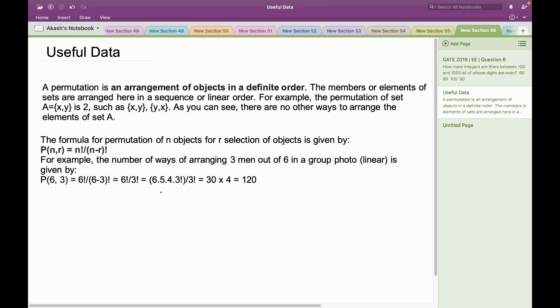In this problem, we require the idea of permutation, which is an arrangement of objects in a definite order. The members or elements of sets are arranged in a sequence or linear order. For example, if I have been given a set A = {x, y}, then the number of permutations of A would be 2, which is xy and yx, because these are the only two ways I can arrange the two elements in set A.